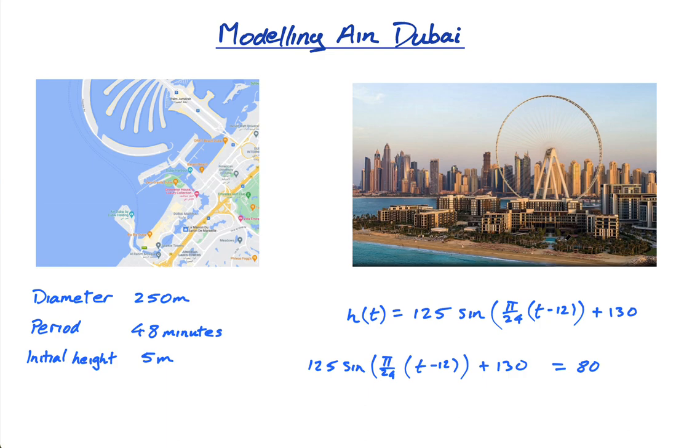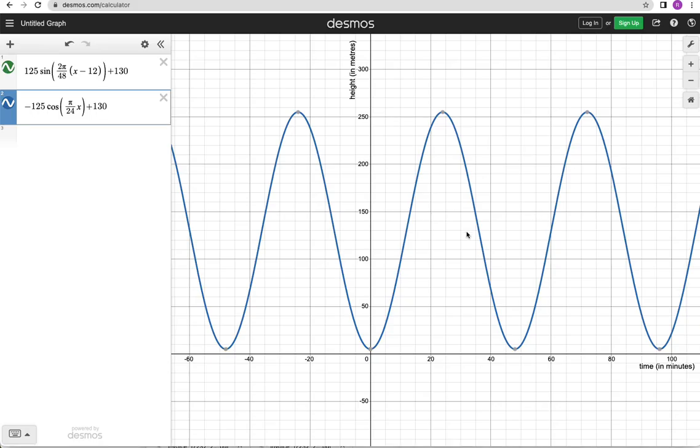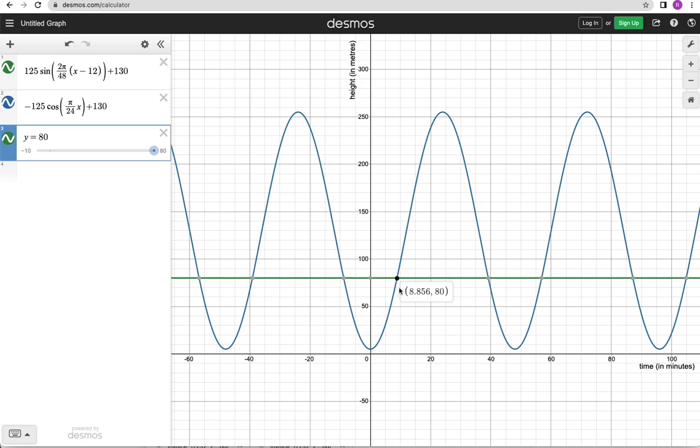She even calculated exactly what time she should get on the Ferris wheel to be sure she sees the sunset - really nice, perfect IA. For an analysis you want to actually show the working out. You can show it analytically but you can certainly show it with the graph. If it was 80 meters, anywhere between 8.85 minutes and 39.144 minutes you would be above that building and hence able to see the sunset or whatever it happens to be that you want to see.